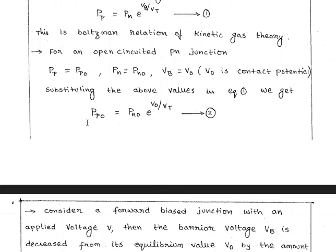For open circuit condition: pp equals pp0, pn equals pn0, and Vb equals V0, where V0 is the contact potential. So pp0 equals pn0 into e power (V0 / Vt).